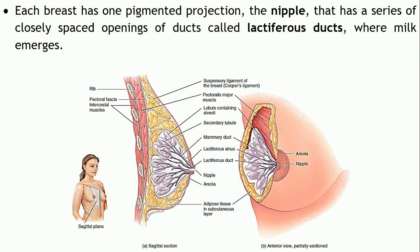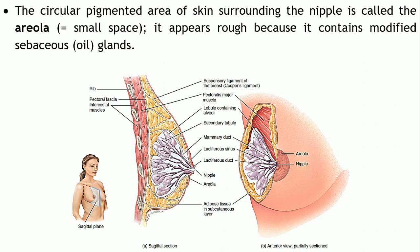Each breast has a centrally located pigmented projection known as the nipple. This nipple contains a series of closely spaced openings of ducts called lactiferous ducts. These lactiferous ducts open onto the surface of the nipple and convey milk towards the exterior.